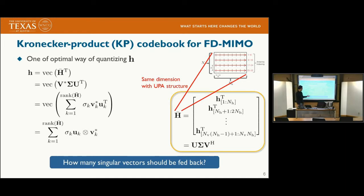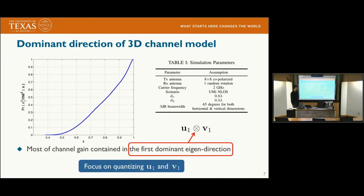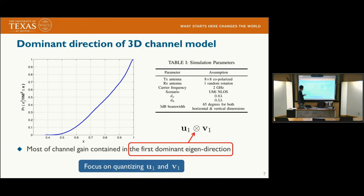The question is how many singular vectors should be fed back to balance feedback overhead and quantization performance. To answer this, we perform numerical studies based on the 3D channel model. The CDF plot of the fractional channel gain contained in the first dominant eigendirection, defined as the Kronecker product of U_1 and V_1, shows that 90% of channel gain is contained in the first dominant eigendirection for 70% of channel realizations. So we focus on quantizing U_1 and V_1.